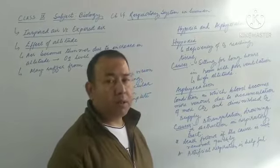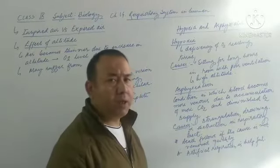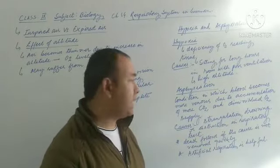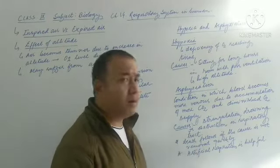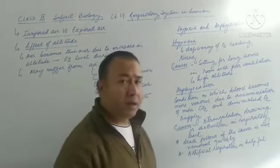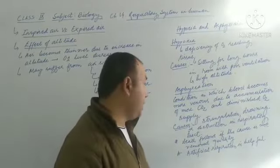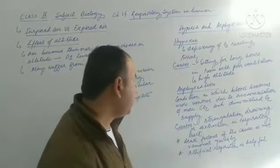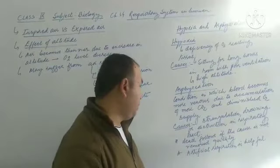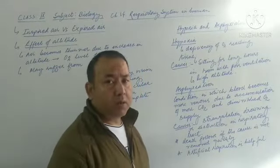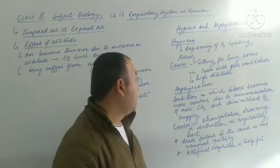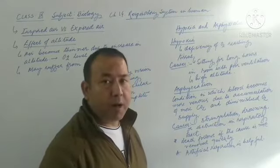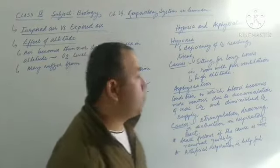So the main causes of this asphyxiation, asphyxiation usually occurs during the strangulation. Then again drowning. If someone drowns in the river or something like that, that time you may find this kind of condition. Then again after that, if obstruction is there in the respiration, then also this asphyxiation usually takes place. Then asphyxiation may also lead to death if the cause is not removed quickly. Then again, in order to overcome this asphyxiation, what we are supposed to do is that the victim must be provided with artificial respiration. So, this is about the hypoxia and asphyxiation.